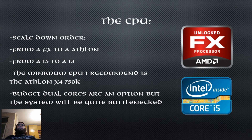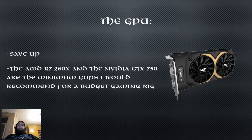Sixth is the CPU — you could scale down from an i5 or FX to an i3 or Athlon. The minimum I would recommend is the Athlon X4 750K. Budget dual cores are always an option but your system will experience significant bottlenecking. And finally, the GPU — if you are forced to make a big compromise on the GPU I would recommend that you save up more resources for your build. The minimum GPU I would recommend is the AMD R7 260X or the Nvidia GTX 750.